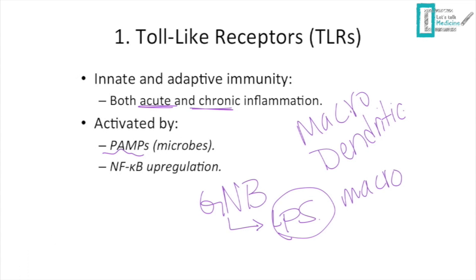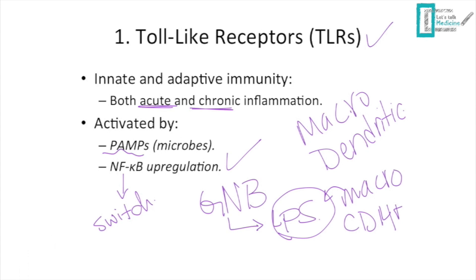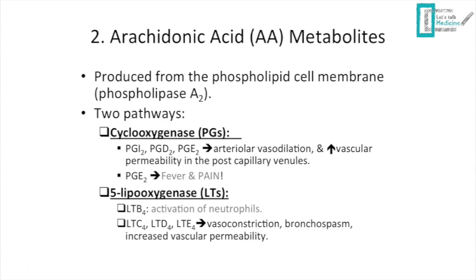Macrophages recognize LPS through CD14 — this is a really important clinical correlation. TLRs also upregulate NF-κB, acting like a molecular switch: when toll-like receptors are activated, NF-κB is switched on, and acute inflammation is activated.